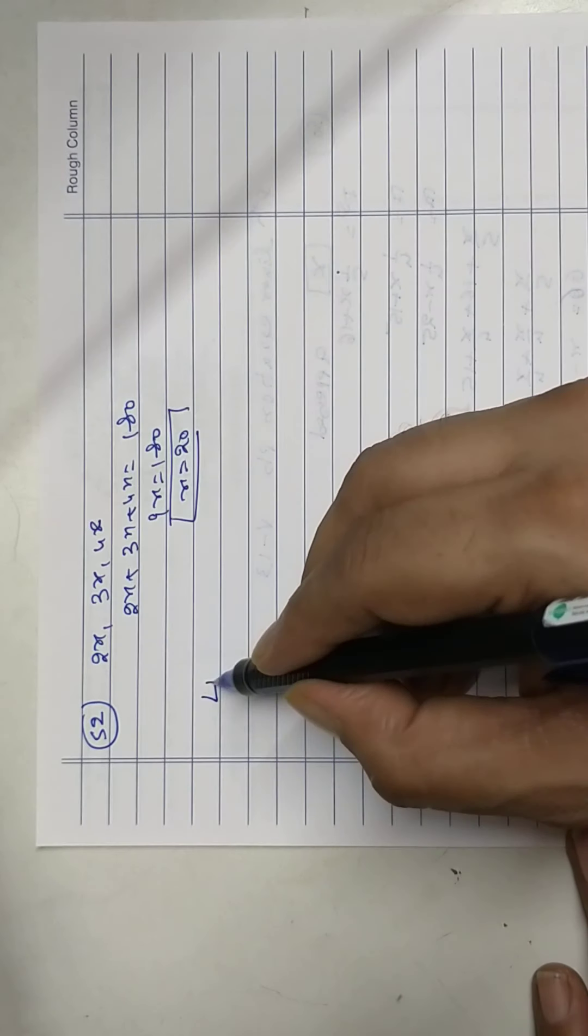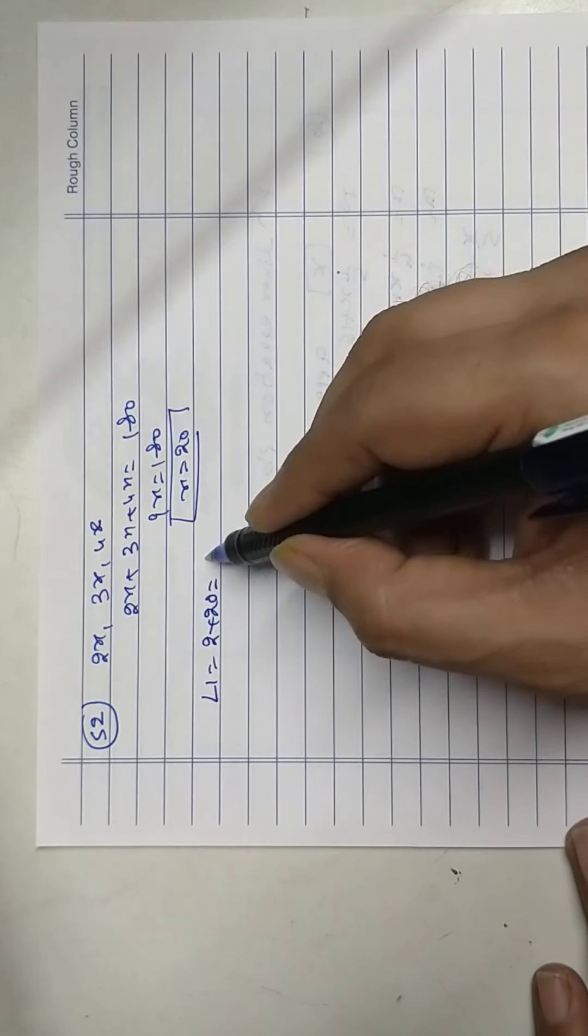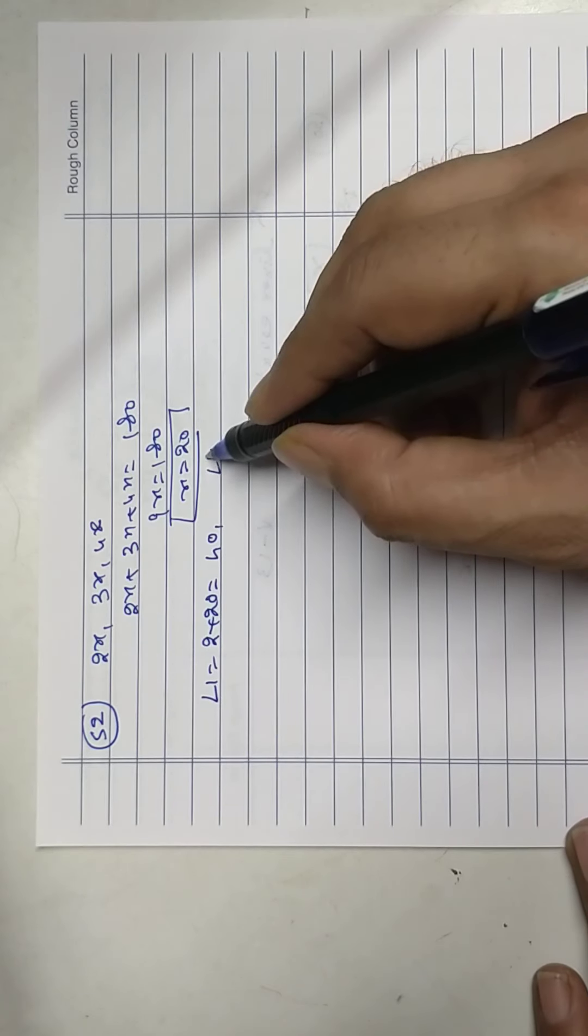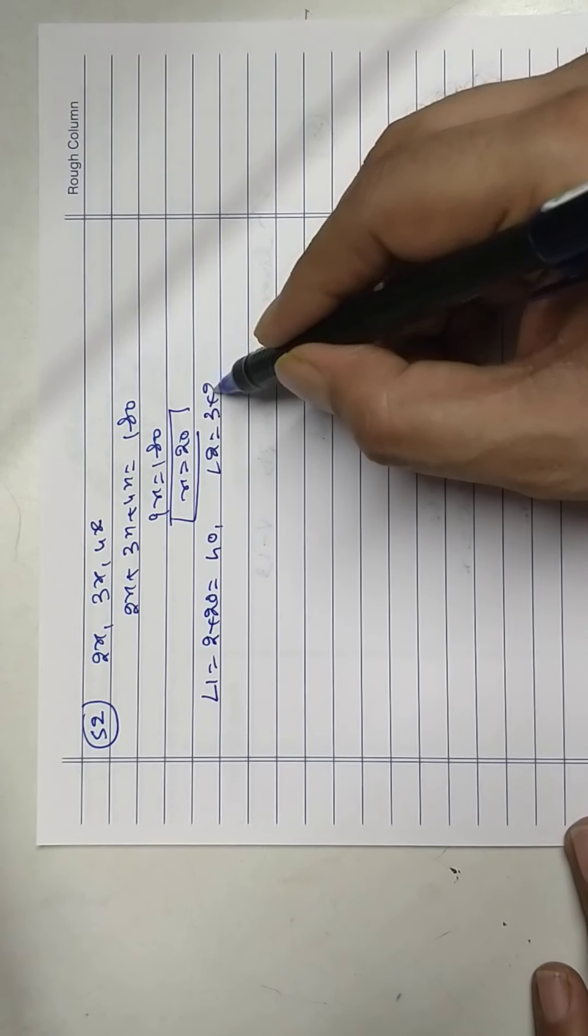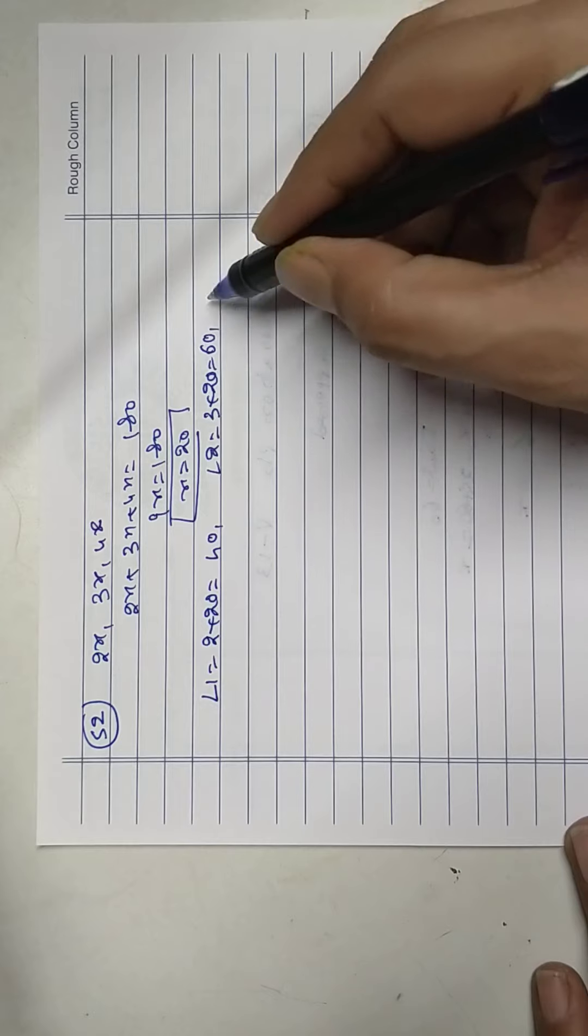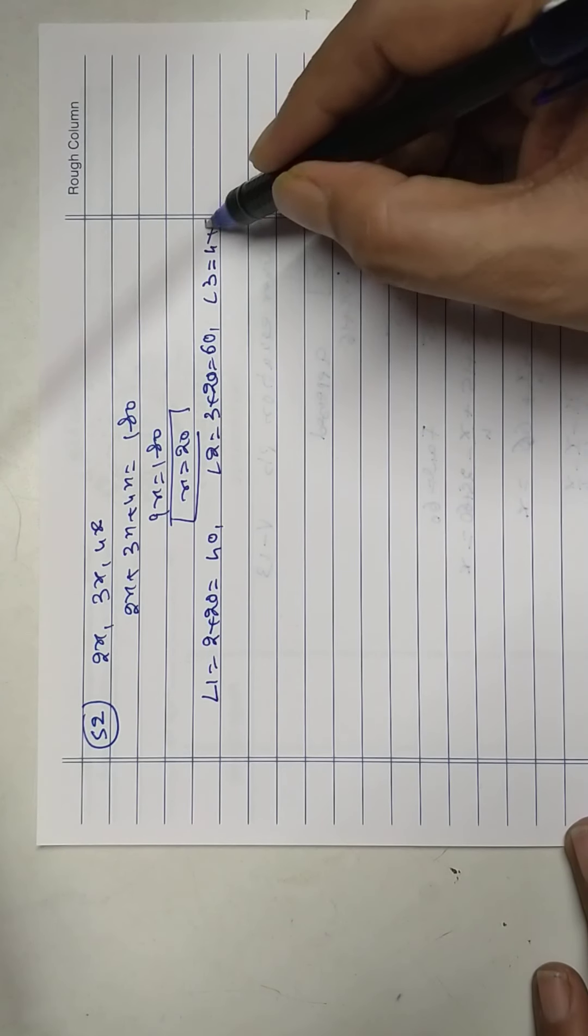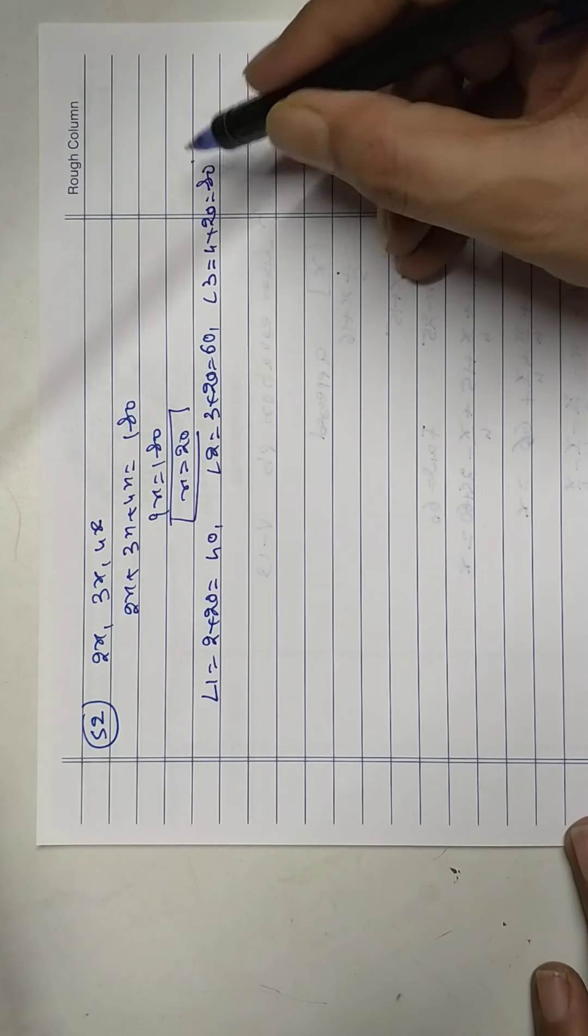Substitute value. Angle 1 is 2 times 20, that is 40. Angle 2 is 3x into 20, that is 60. Angle 3 equal to 4x into 20, that is 80 degrees.